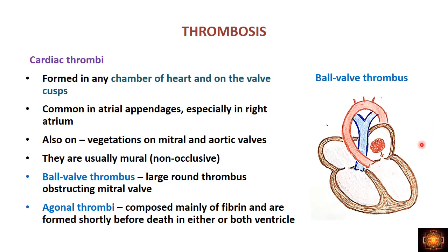Two special types of cardiac thrombi: the ball valve thrombus, usually seen in the left atrium, where a large round thrombus is present in the cardiac chamber — when the chamber contracts the thrombus moves and obstructs the valve, and when it relaxes the thrombus moves back and the valve opens. The second is agonal thrombi, composed mainly of fibrinous material, formed shortly before death, and seen in both ventricles.